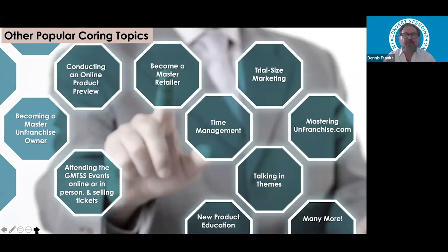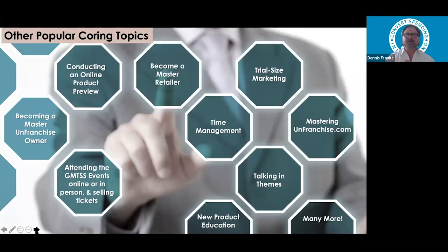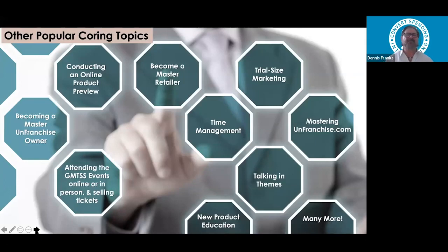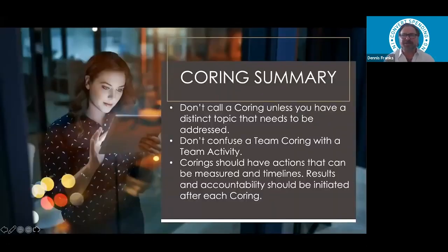There are lots of different areas you can have corings on: product preview corings, becoming a master unfranchise owner, a master retailer, trial size marketing, time management. So many people don't know how to schedule their 10 to 12 hours a week. People think that just because they think about the business, they're doing the business — that's not it. We need focus time, not leverage time. When we ask for 10 to 15 hours, we're asking for focus time as if you were going to a job. You can do talking in themes, attending GMTSS events, selling tickets, new product education — it's unlimited what you can do corings on.